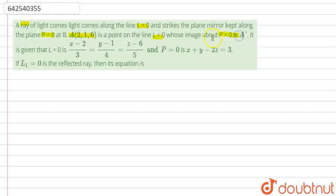It is given that l equals 0 is x minus 2 by 3, y minus 1 by 4, and z minus 6 by 5, and p equals 0, x plus y minus 2z equals 3. If l1 equals 0 is the reflected ray, then we have to find the equation.